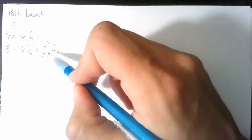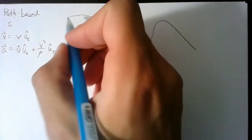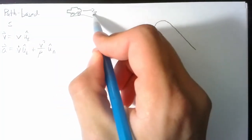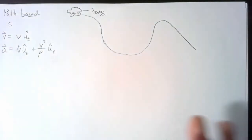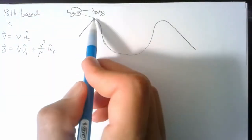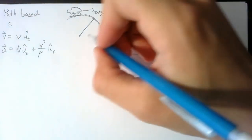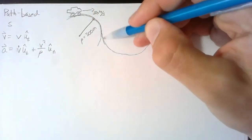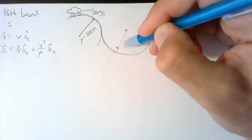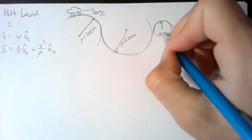The last problem is the path-based system. Let's look at a car on a winding road traveling at 30 meters per second — roughly 60 to 65 miles per hour. We have three turns with different radii of curvature: the first turn has a radius of 300 meters, the second is 500 meters, and the third is a very tight turn at 100 meters. We want to find the magnitude of acceleration for each turn.